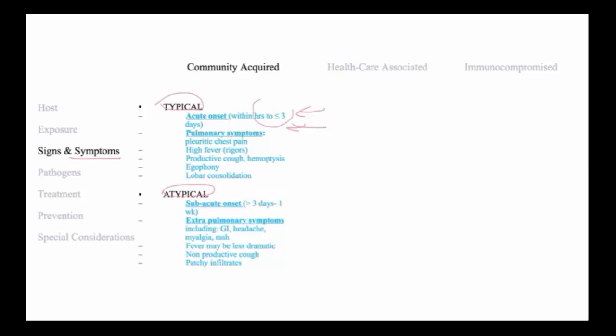While atypical pneumonia is characterized by a longer onset of duration that is generally measured in many days to a few weeks. Pulmonary symptoms of typical pneumonia is predominantly pleuritic chest pain. They also may present with rigors, productive cough with hemoptysis, on physical finding may have egophony, and dense lobar consolidation by x-ray.